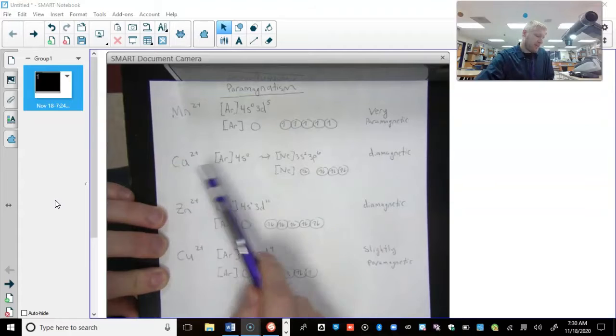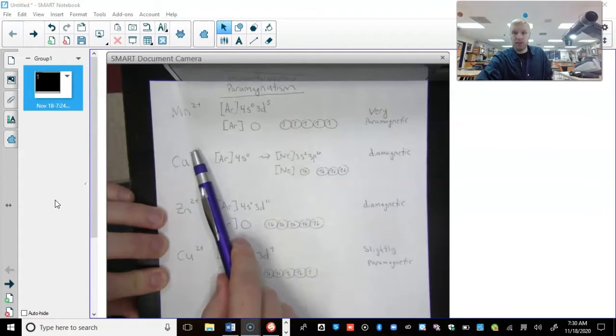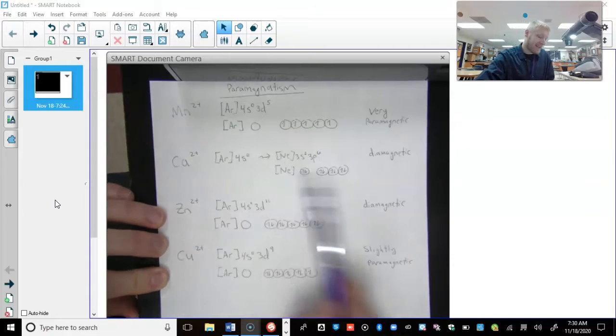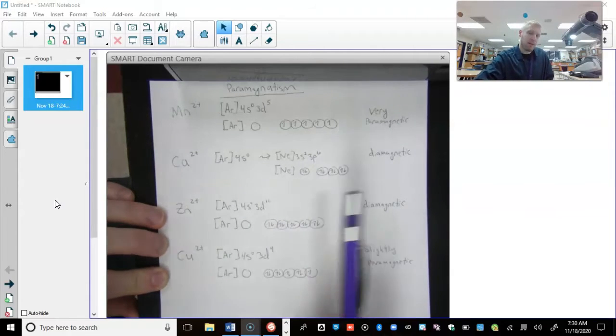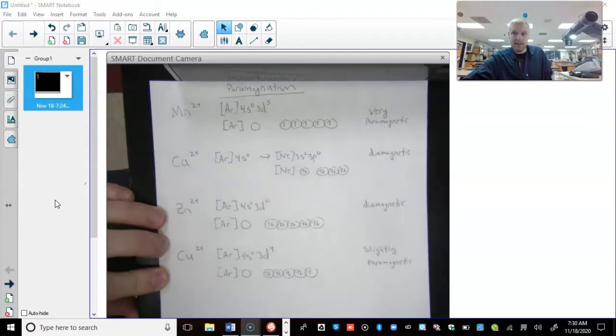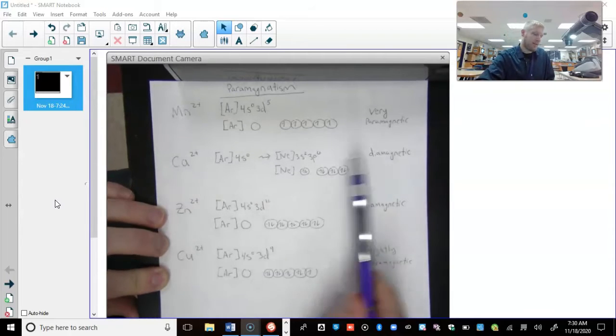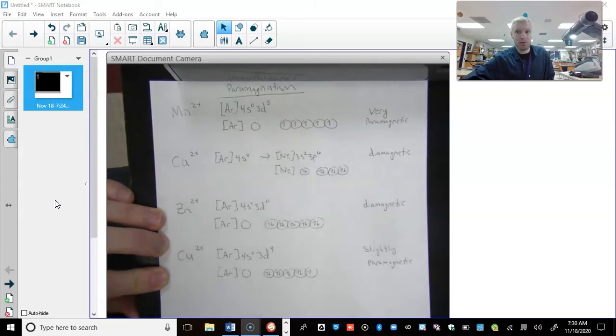You've got calcium 2+. We look at it, the outer valence electrons are taken away. So I'm showing the next energy level, 3s2, 3p6. And it's totally filled, and there's not even any d electrons there. So this one's diamagnetic for sure. It's not going to be moved by the presence of a magnetic field.